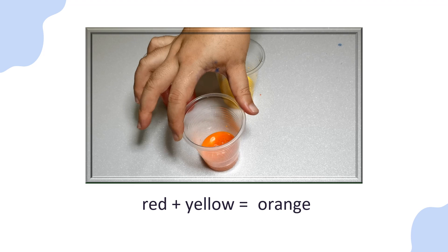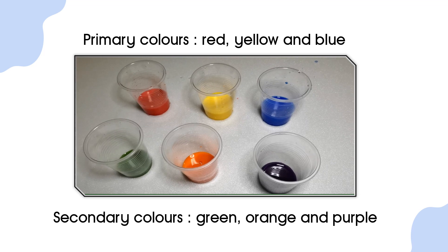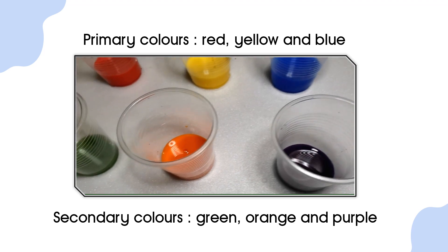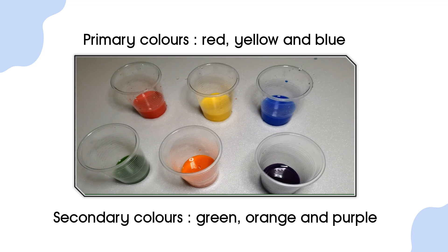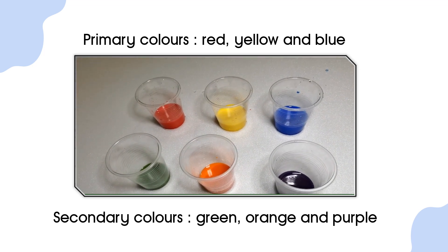We are done with our magic. Now we finish our magic. Now we have all the six colors. We have the primary colors red, yellow, and blue. And we have secondary colors green, orange, and purple.